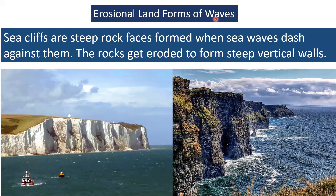Erosional landforms of waves. Sea cliffs are steep rock faces that form when sea waves dash against them. The rocks get eroded to form steep vertical walls. The area of steep vertical walls formed by the continuous action of waves is called a headland.